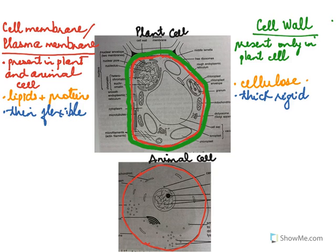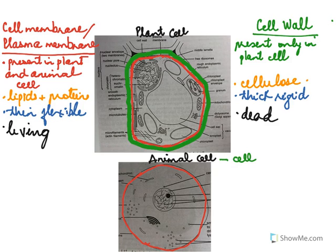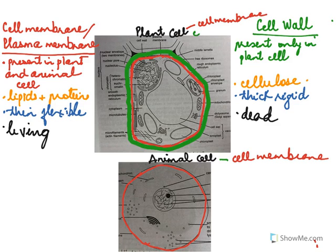Another difference is that the cell wall is not living — it's dead — while the cell membrane is living. These are the key differences between the cell wall and the cell membrane. Since the animal cell has only the cell membrane, an animal cell is bounded only by the cell membrane, while the plant cell has both the cell membrane and the cell wall.